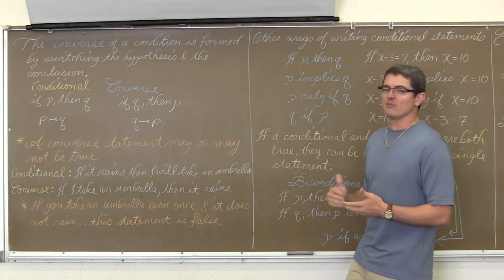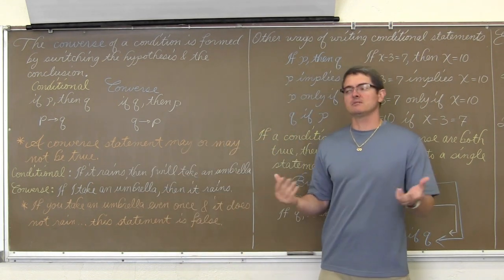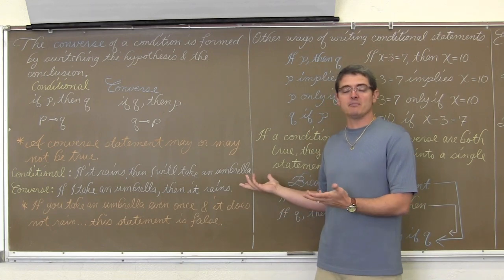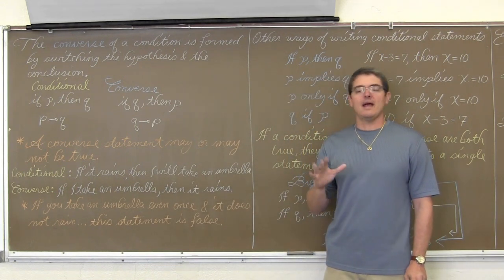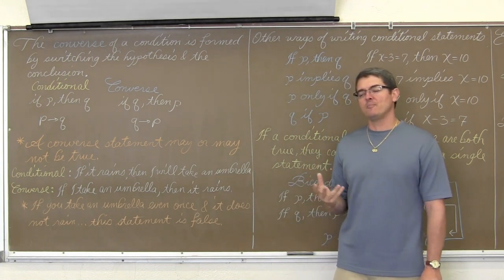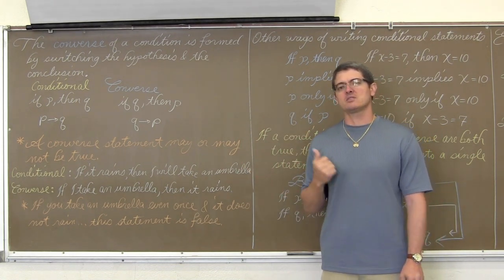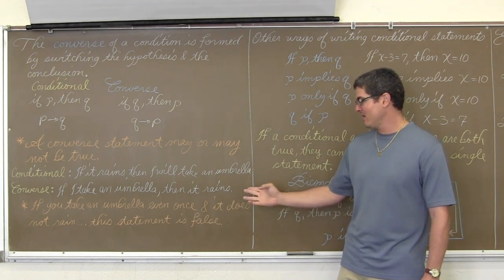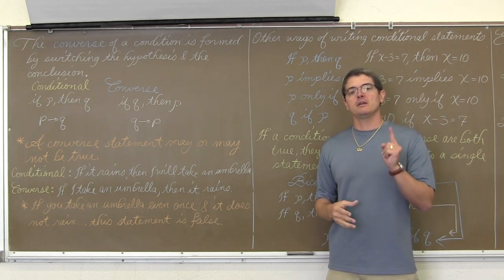Here is a somewhat ridiculous example and it will be false — though that is not always the case. Our conditional statement: if it rains, then I will take an umbrella. Let's say every time it rains I will take an umbrella — that can be a true statement. However, the converse is: if I take an umbrella, then it rains. The weather does not care whether I have an umbrella or not. All I need to prove that false is one counter-example. The first time I take that umbrella and it does not rain, I have proven this statement false. To prove an if-then statement false, all you need is one counter-example.